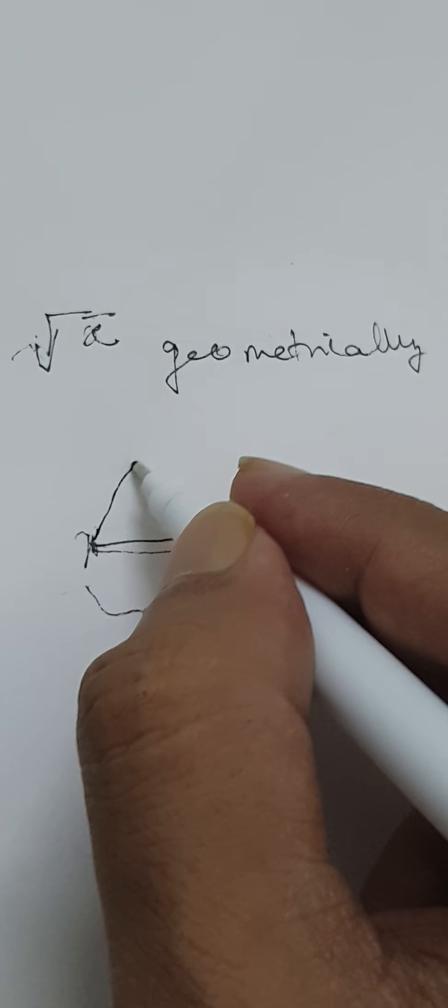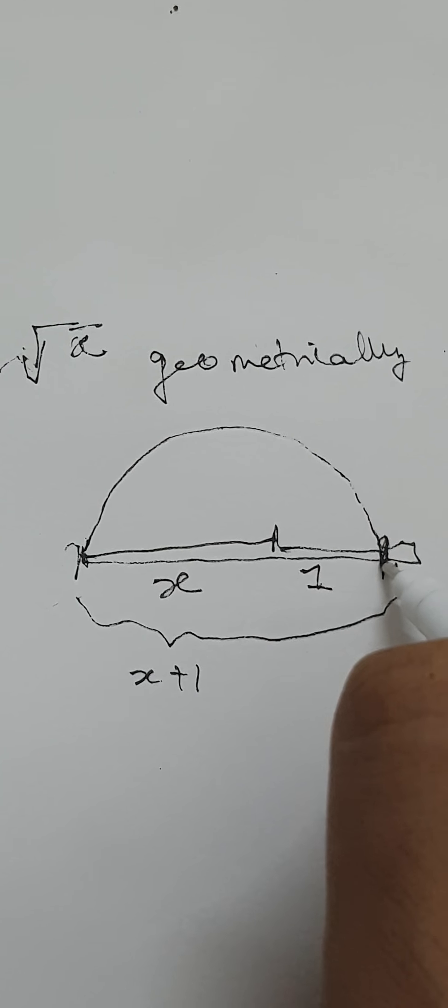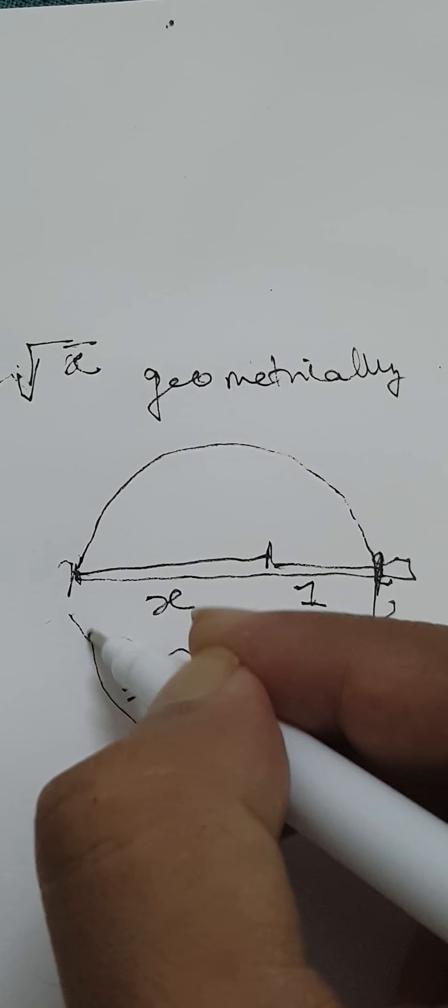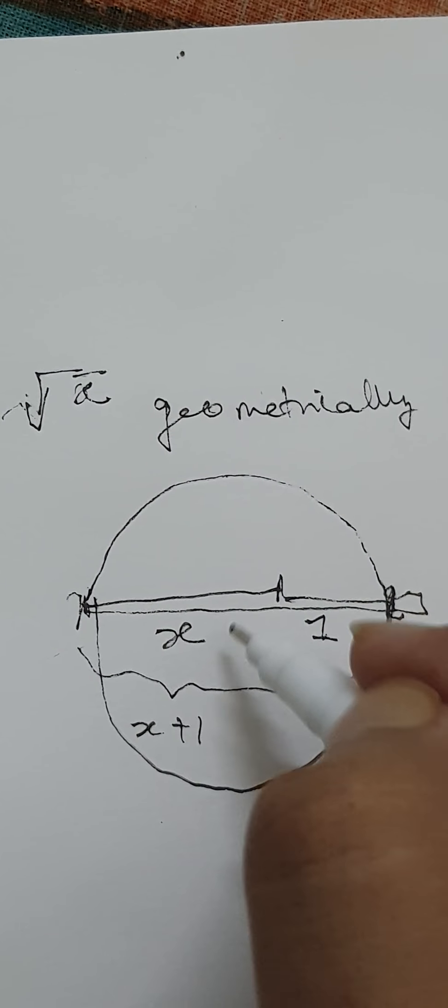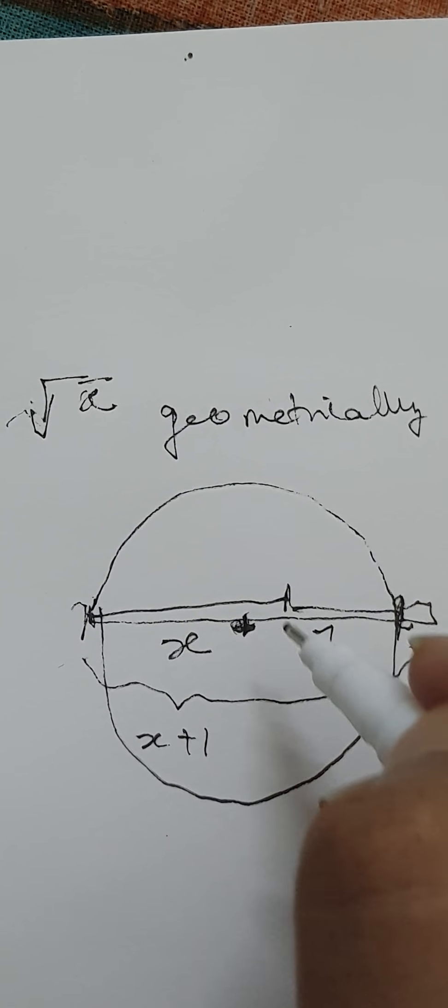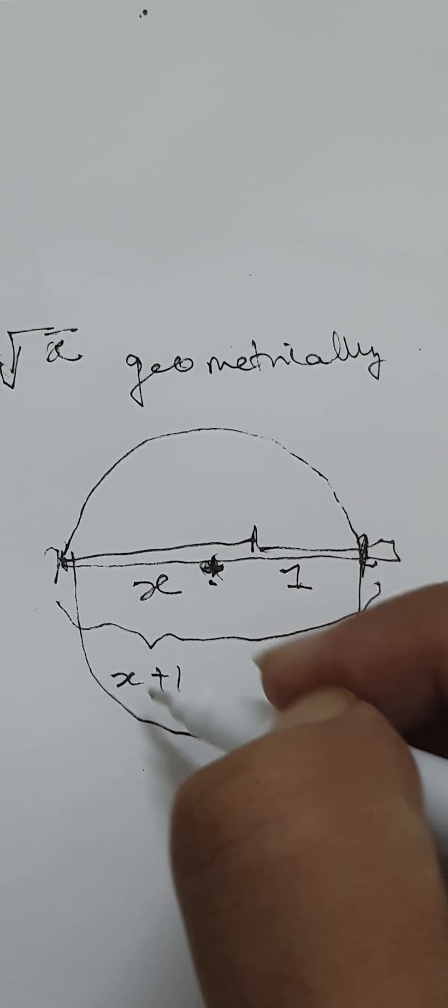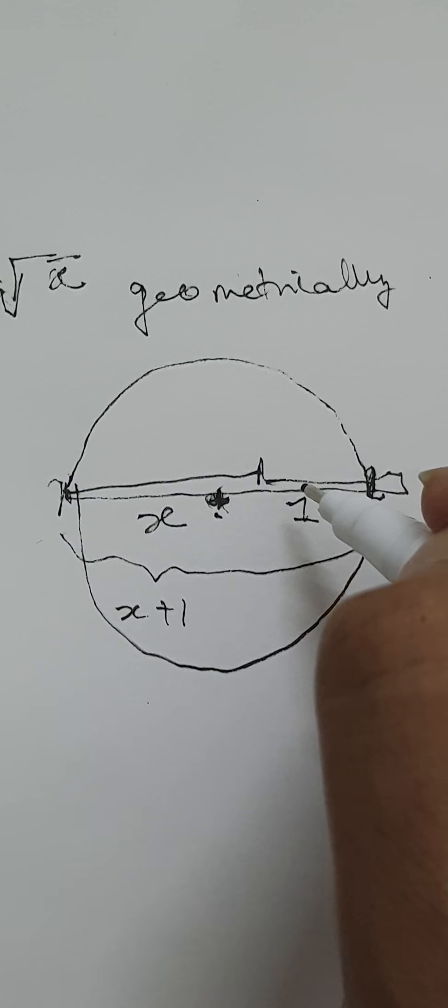If we draw a circle through this such that x plus 1 is the diameter, then the radius is defined by half of that. So x plus 1 by 2 is the radius.